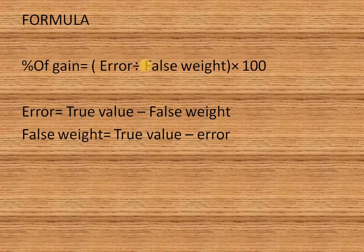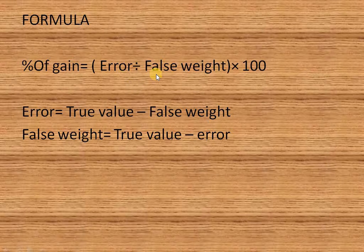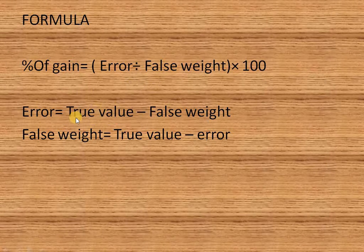In the dishonest dealer case, there is a formula: percentage of gain equals error divided by false weight, into 100. Here, error is the true value minus the false weight.